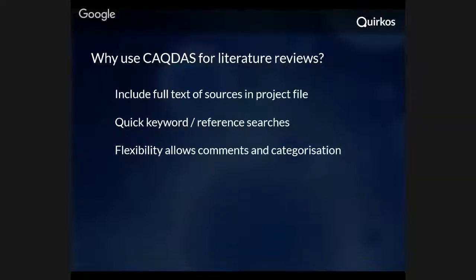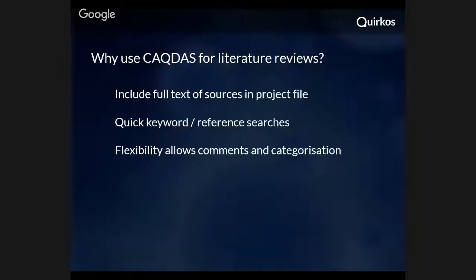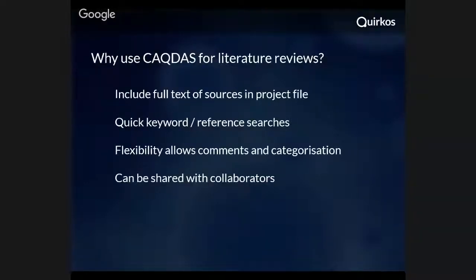The flexibility in this kind of software allows you lots of different ways to sort your literature — maybe even ways like literature I agree with or literature I don't agree with. You can set up any kind of category and look to see comparisons between those different categorizations. And you can also keep comments and memos on your project and on particular articles, so you can write yourself little notes about a source and whether you think it's credible or not.